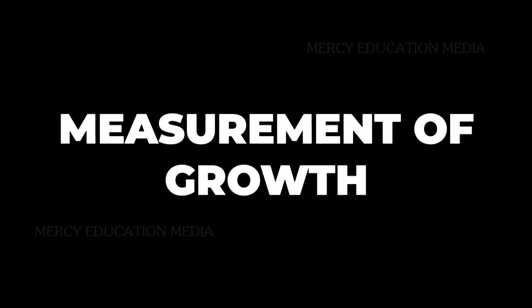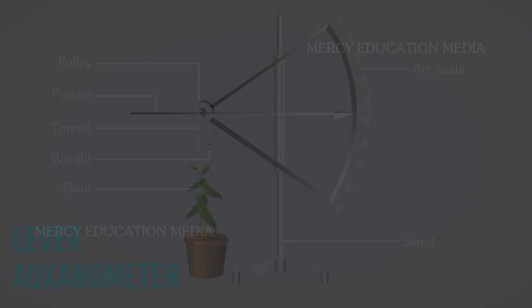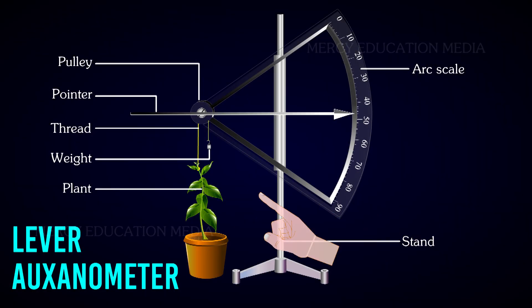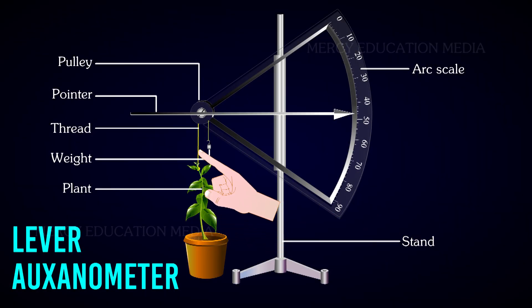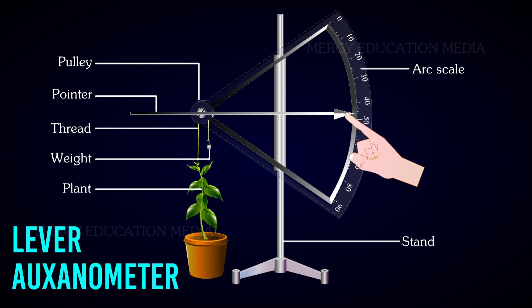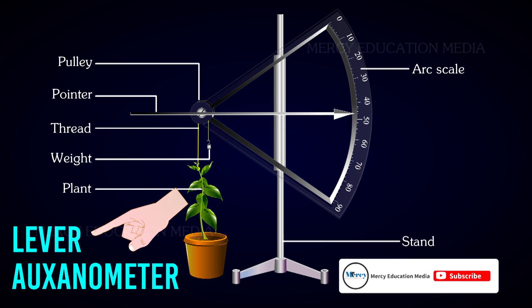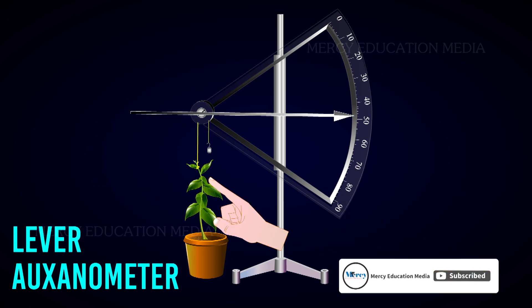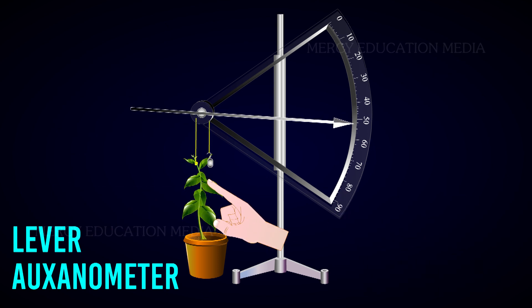What do you know about the measurement of growth? For any plant, the growth in length can be measured using an ordinary measuring scale at an interval of time. For precise measurement, an instrument called a lever auxanometer is used. It measures the rate of growth of a plant in terms of length.